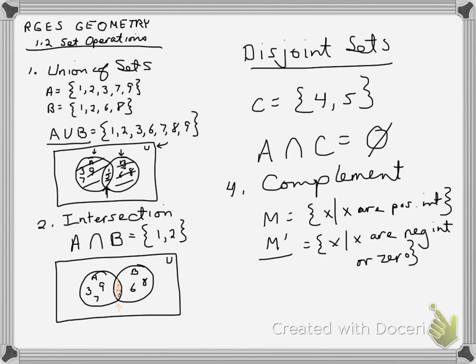In this case, maybe my universal set are all the integers. Integers consist of positive integers, negative integers, and 0. So if my universal set is all integers, then that would be the complement.